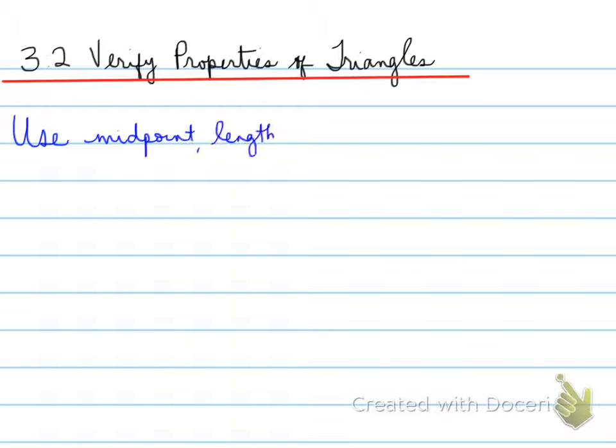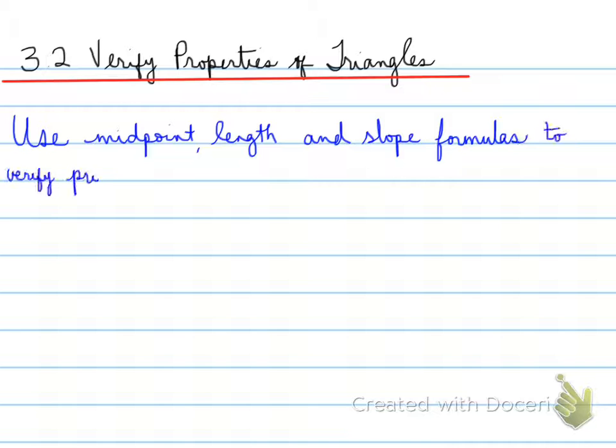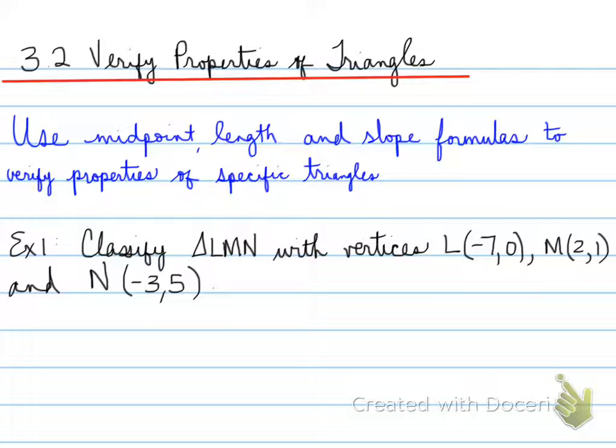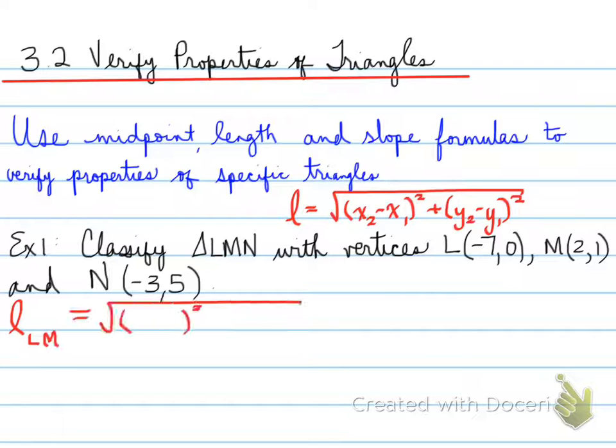We're going to move to 3.2, because 3.1 talks about different properties and theorems. 3.2 is we're verifying these properties. So we can use midpoint length and slope formulas to verify properties of specific triangles. For example, we can classify triangle MLN with the vertices L, M, and N as listed. When you classify, you need the length formula.